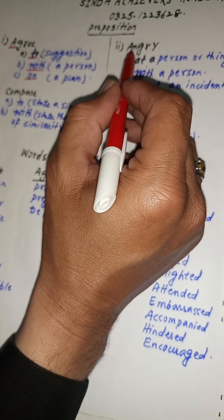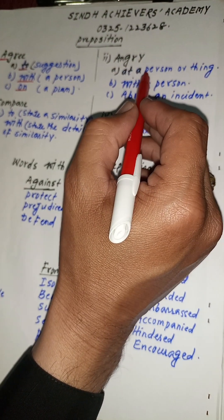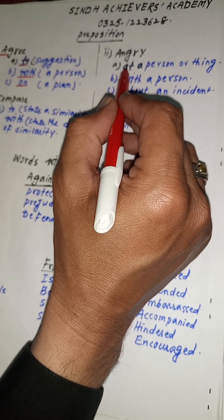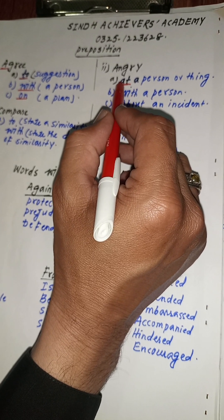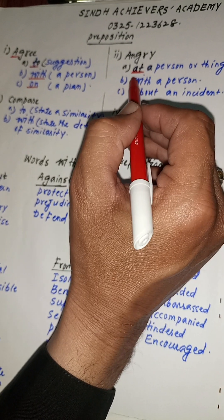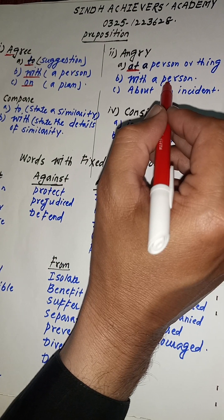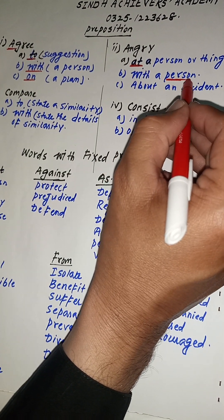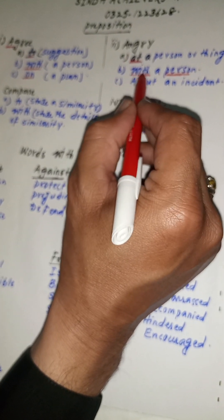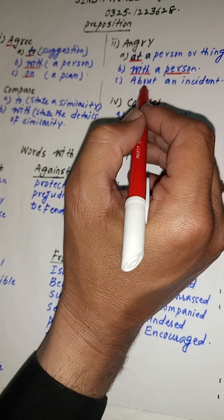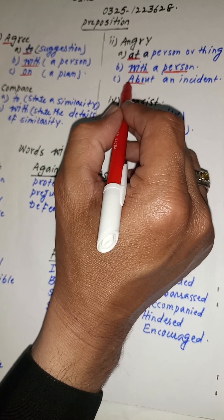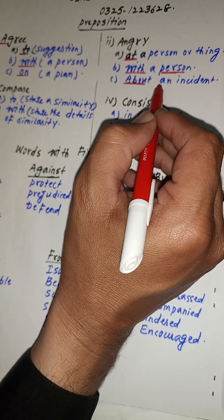We have the word ANGRY. When showing anger at a thing or a person in general, we use 'angry at'. When showing anger specifically toward a person, we use 'angry with'. When showing anger about an incident, we use 'angry about'.